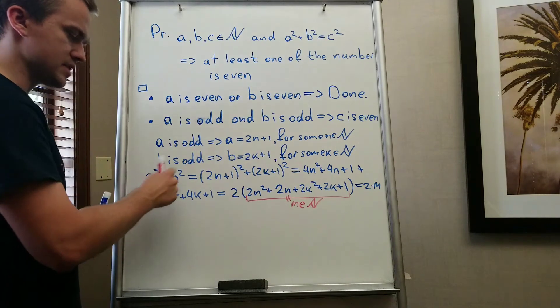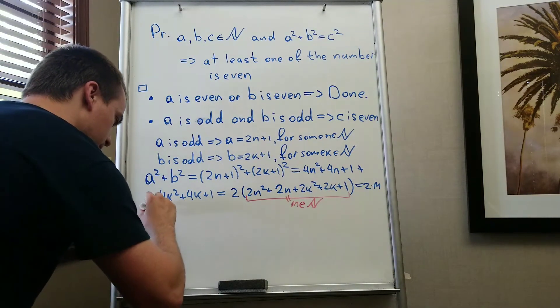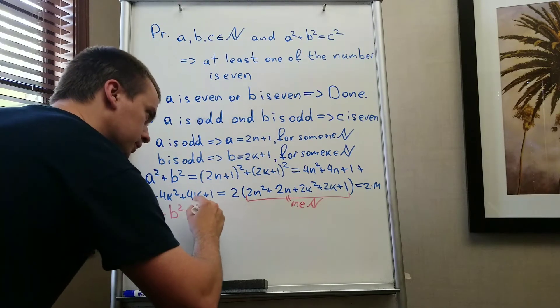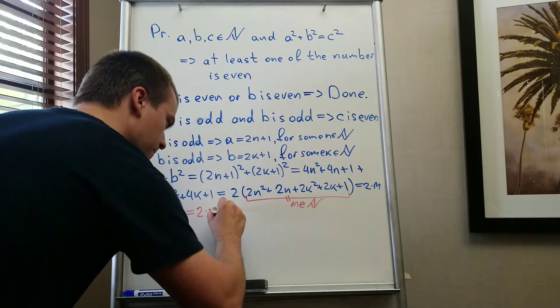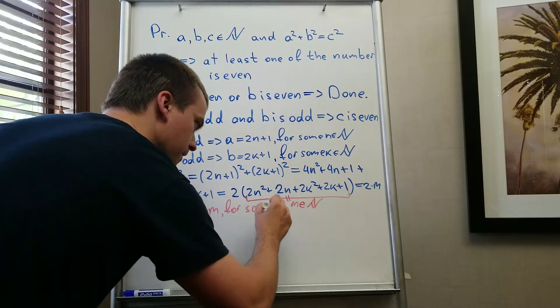And you can see you haven't divided here, so this thing belongs to n. So a squared plus b squared, let me rewrite this, I'll get that a squared plus b squared equals 2 times m for some m belongs to n.